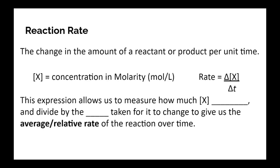So change over time. Now, velocity and speed is change of displacement over time. Here, because we're dealing with chemicals, this is going to be generally the concentration in molarity. That's what those square brackets mean, of a reactant or product over time. So this expression, this rate of delta X, that triangle X over delta T, allows us to measure and compare how much our concentration of X changes and divide by the time taken for that change to occur and gives us the average relative rate of the reaction over time.